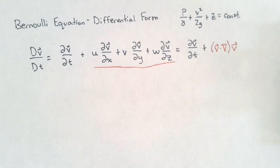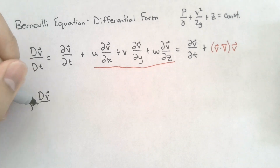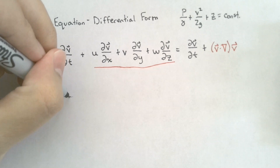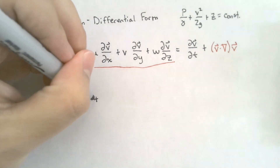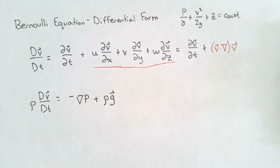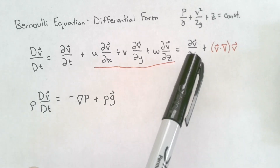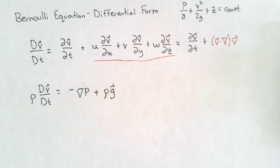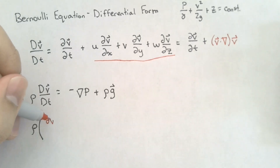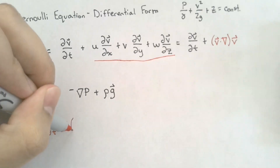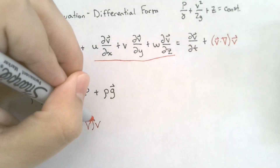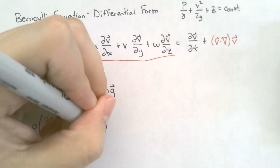Let's write down Euler's equation in differential form. Euler's equation states that the density times the material derivative of the velocity is equal to the negative gradient of the pressure plus the gravitational force. If we want to express our material derivative in terms of the del operator, we can replace this entire term with the local and the convective changes. That leaves us with an equation of density times the local change plus the convective change, with the rest of the equation looking the same.